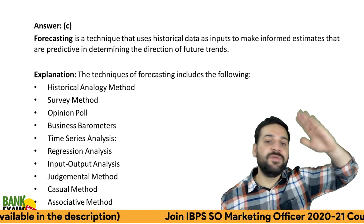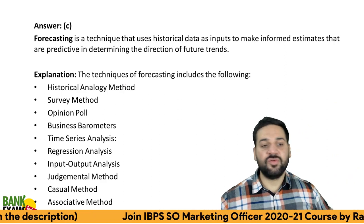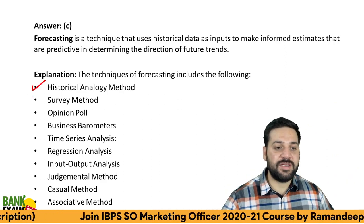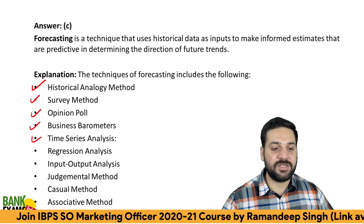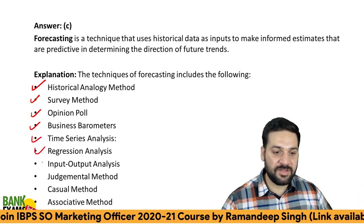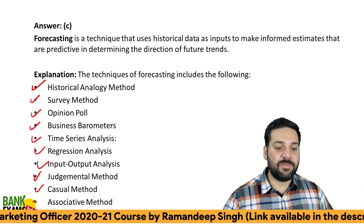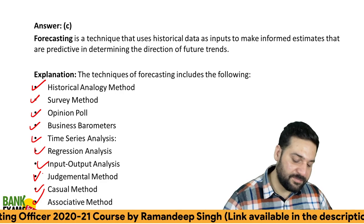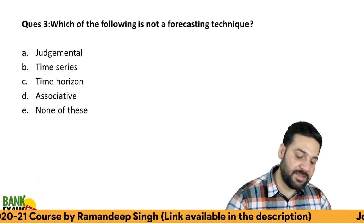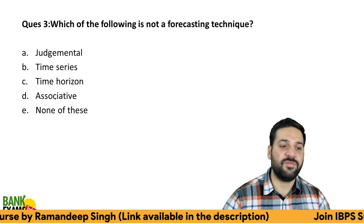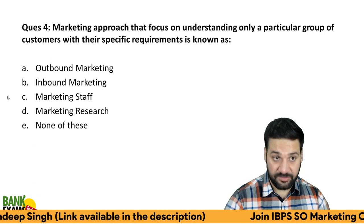Which of the following is not a forecasting technique? Forecasting uses historical data to predict the future. Various methods exist: historical analogy, survey method, opinion poll, business barometer, time series, regression, input-output, judgmental method, casual method, associative method. Time horizon method is not a recognized forecasting technique — it's made up — so time horizon method is the correct answer here.